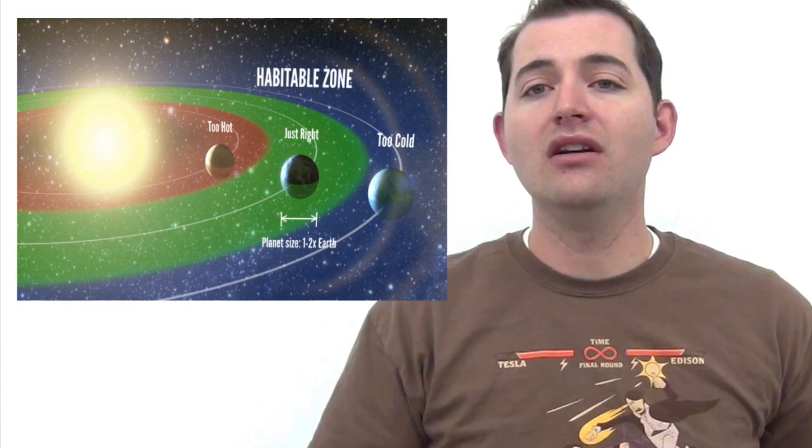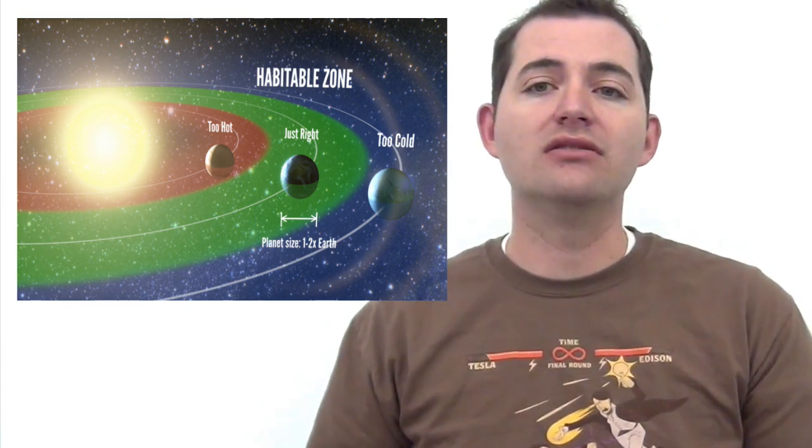All of these things play into where astronomers look for life in our galaxy. Because we know what life is like on Earth and we know that the Earth is in the Sun's Goldilocks zone, we look for Goldilocks zones around other stars. And it's in these Goldilocks zones where we look for life because we assume that life there will be similar to life here. And those are the places where we focus our attention to try and find other planets that might have life on them.